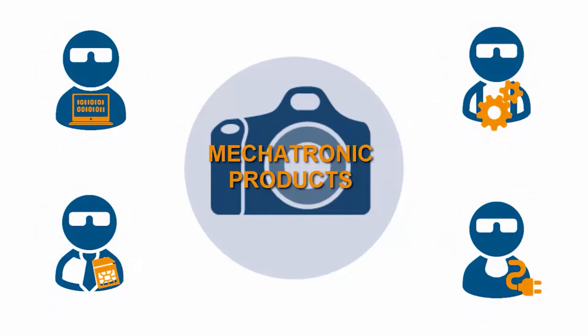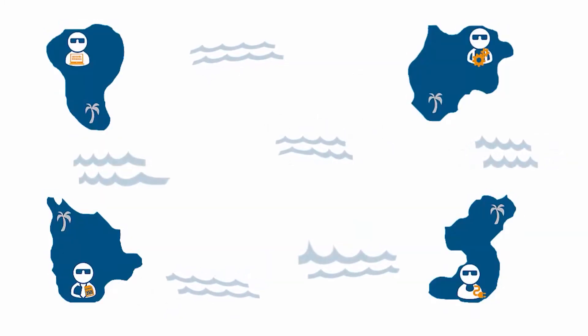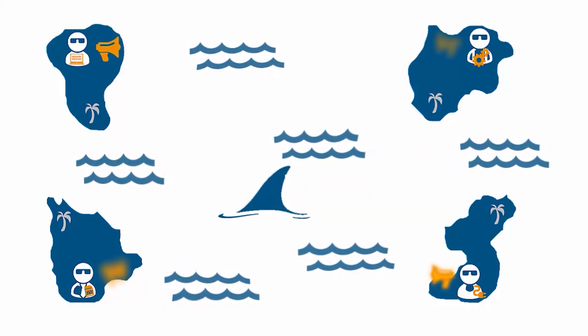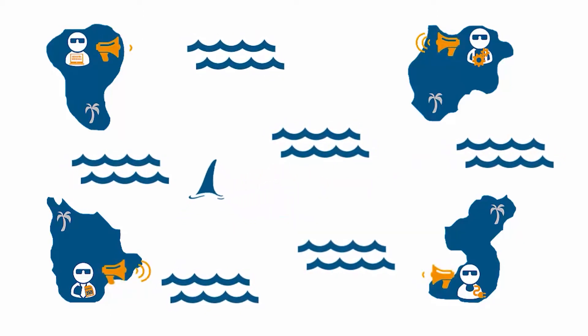Since there are many different engineers from various disciplines involved in the development of mechatronic products, not only the products, but also the development processes are becoming more and more complex. All engineers use their specific tools to design and define the product, but those tools are only isolated IT solutions. Metaphorically speaking, it is as though your engineers live on different islands and have difficulties communicating with one another.